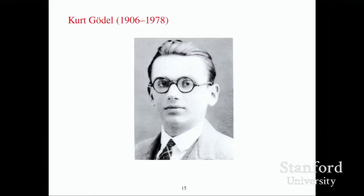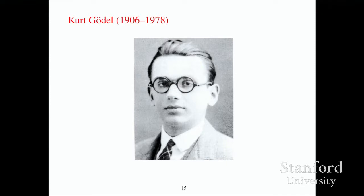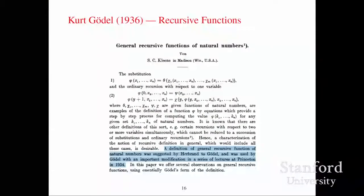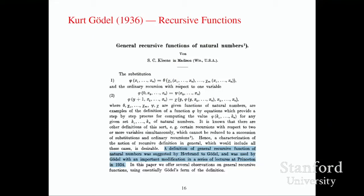Kurt Gödel was visiting at Princeton at the time Church came up with all this, and he had two words for Church's solution: "thoroughly unsatisfactory." So Church said, look, you come up with your own definition, and I will show you that mine is as good as yours. So Gödel did that — he came up with recursive functions, written down by Church's student Kleene with attribution. And indeed, Church and Kleene proved that what recursive functions could do, lambda expressions could do, and vice versa — they were exactly equivalent.